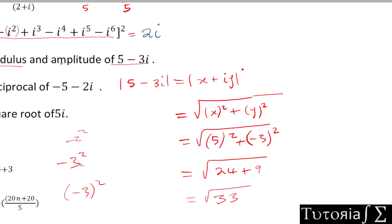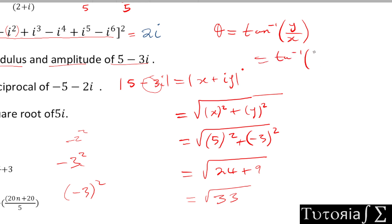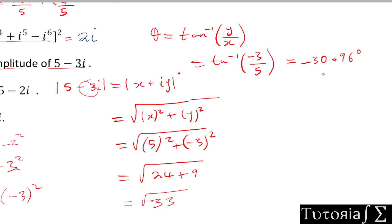The amplitude, also known as the argument or direction, is the angle theta. Theta equals tan⁻¹(imaginary part / real part). Here, theta = tan⁻¹(-3 / 5), which gives approximately -30.96 degrees. That is our amplitude.